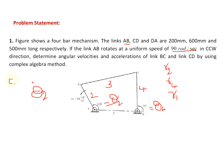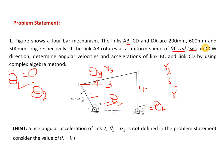Nothing is mentioned about theta2 double dot, the angular acceleration of link 2. The basic principle is that for at least one link I should know all parameters: angular position, angular velocity, and angular acceleration. I know theta2 and theta2 single dot, but theta2 double dot is not defined in the problem, so assume that value as 0. The six unknowns to find are: length of link R3, angular position theta3, angular velocities omega3 and omega4, and angular accelerations alpha3 and alpha4.